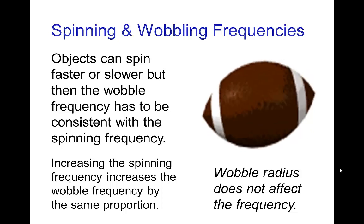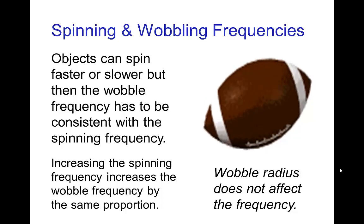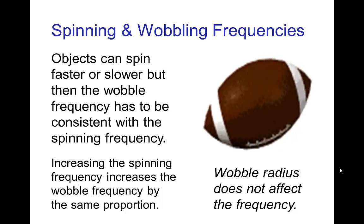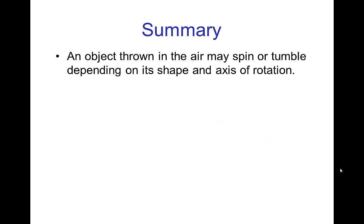So whether you throw it well or poorly, you still get the same wobbling just possibly with a smaller radius. So in summary, an object thrown in the air may spin or tumble depending on its shape and axis of rotation, that's just a general object of general shape.